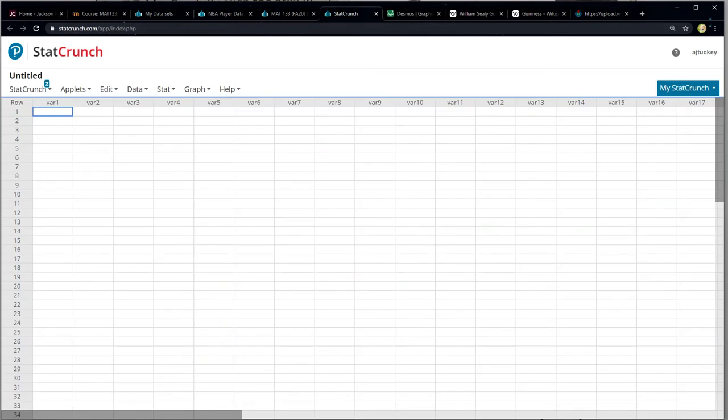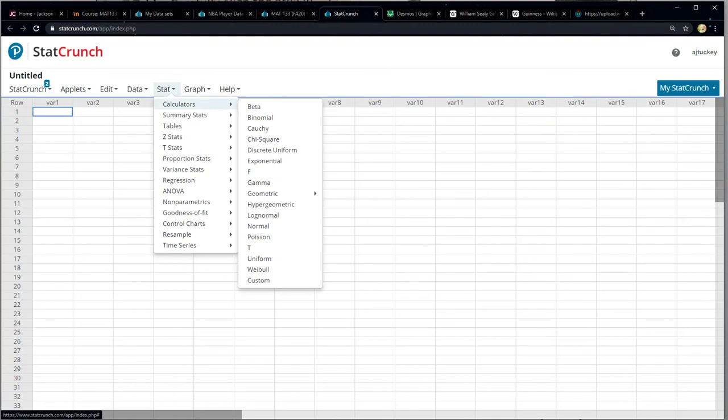Let me begin with StatCrunch. So if I'm in StatCrunch, I would go to Stat, I would choose Calculators, and then see the letter T almost at the very bottom? You click on that.